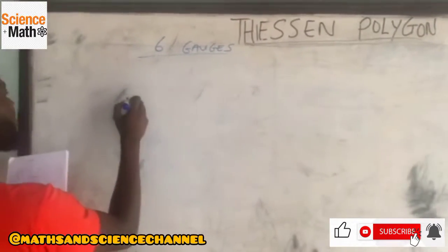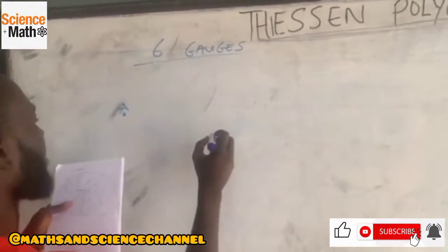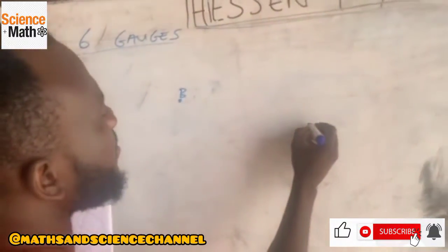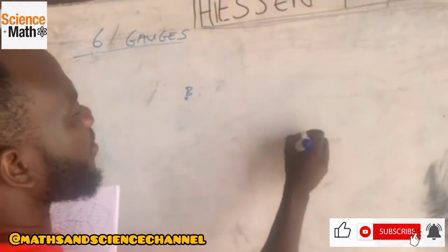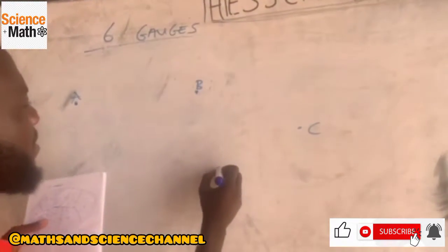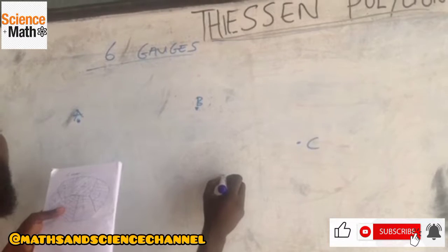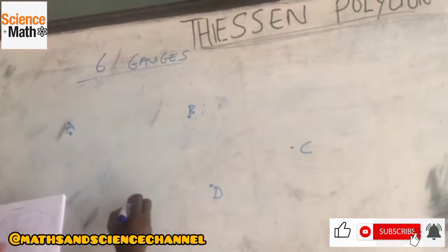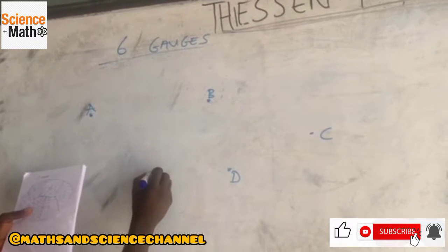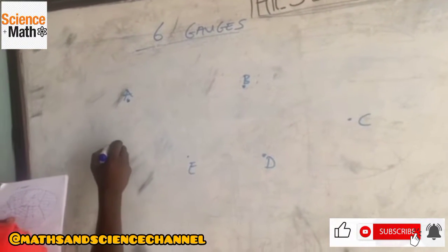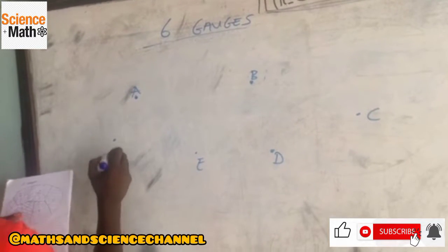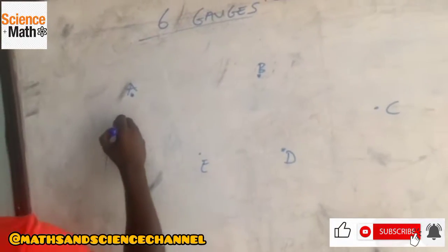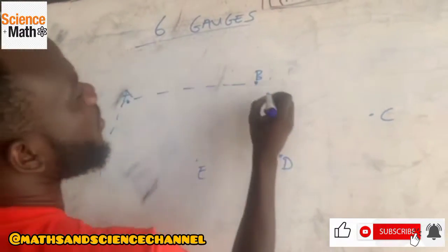We have point A, we have point B, and we have point C. Then we have something like point D, then we have point E. The last one to be point F. Then we try to connect them with the dotted lines.